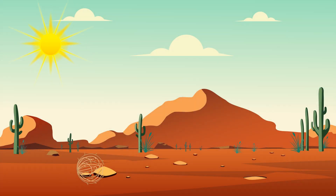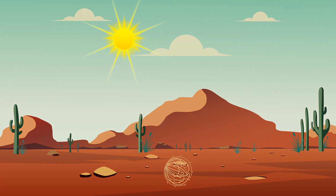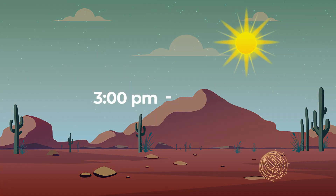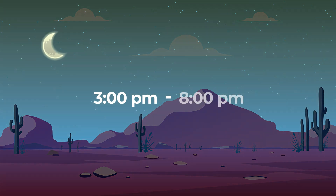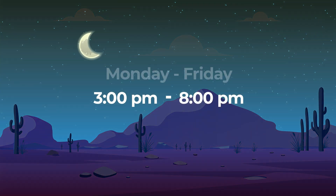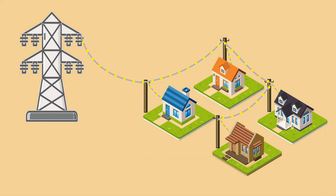In our desert climate, on-peak is typically between 3 pm and 8 pm, Monday through Friday. This is the time the grid is stressed the most.